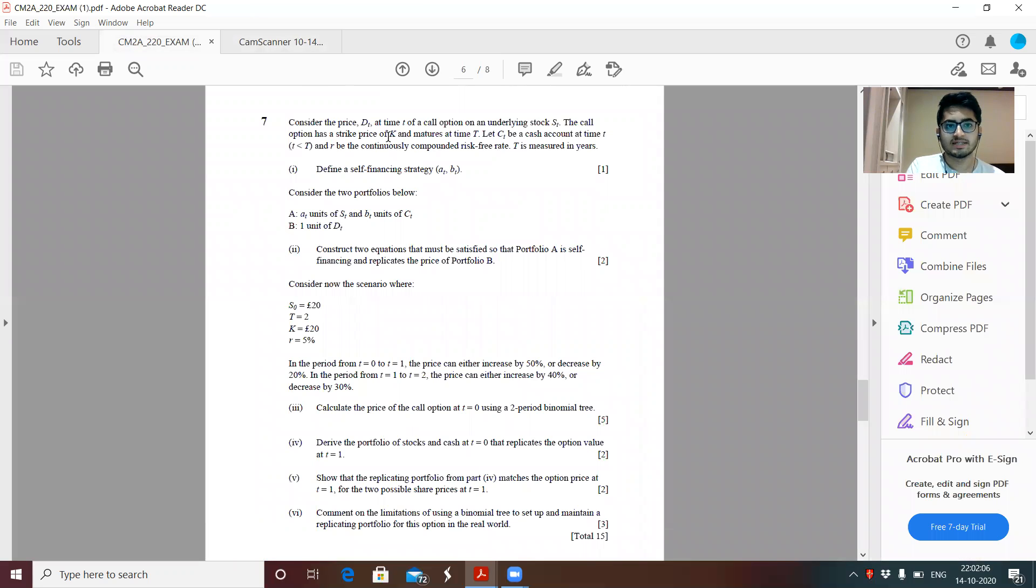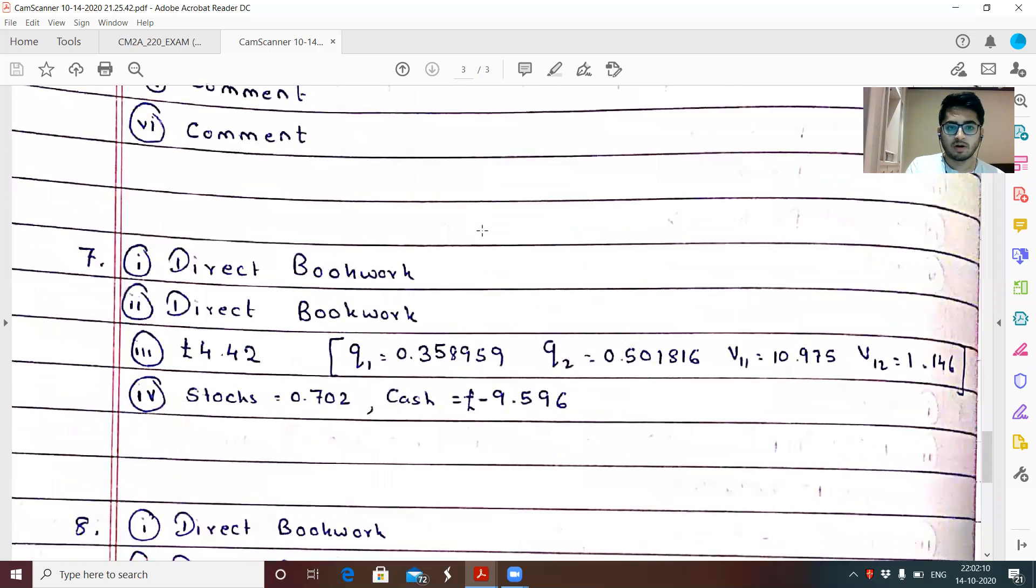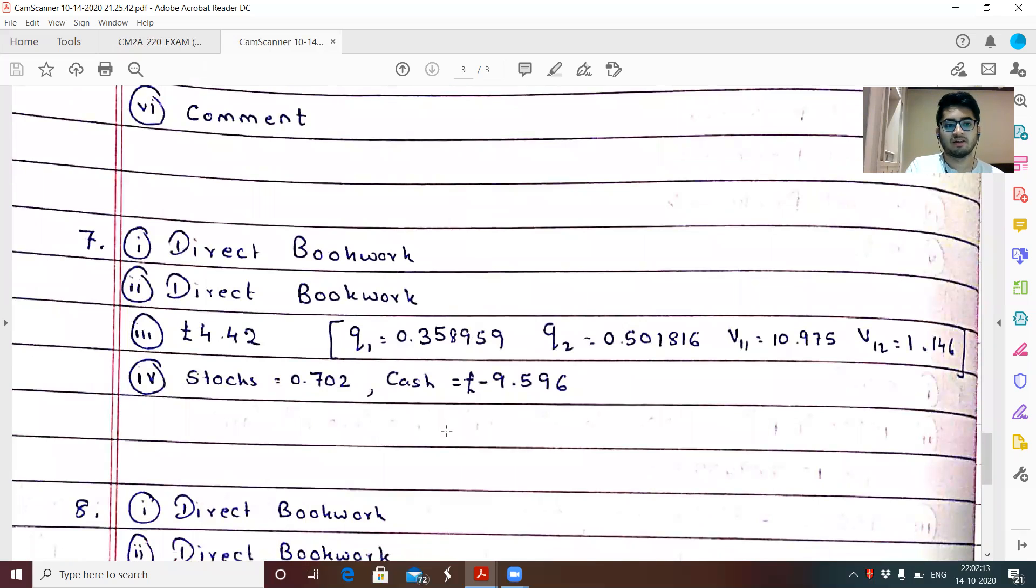Question seven. Part one and part two were direct book work. The value of the option was coming out to be 4.42. Here the values of Q1 and Q2 would have been different due to different values of u and d. So the price at the first node at time one was 10.975. And at the second, it was 1.16. For the fourth part, the replicating, the stock was coming out to be 0.702 and cash was coming out to be minus 9.596.